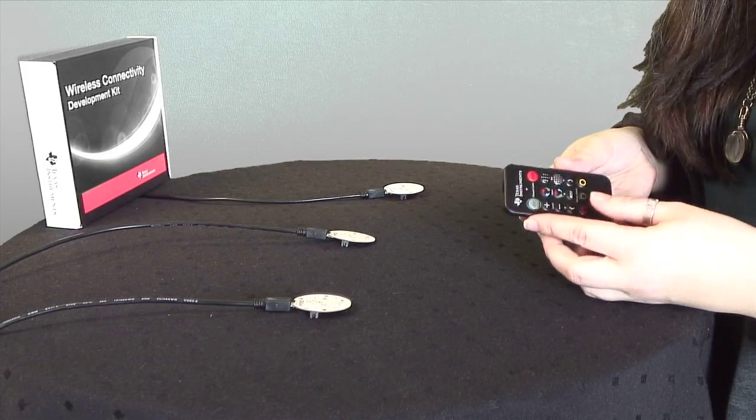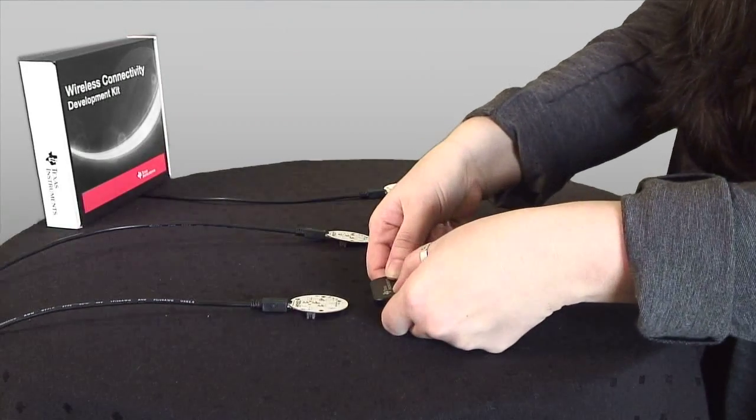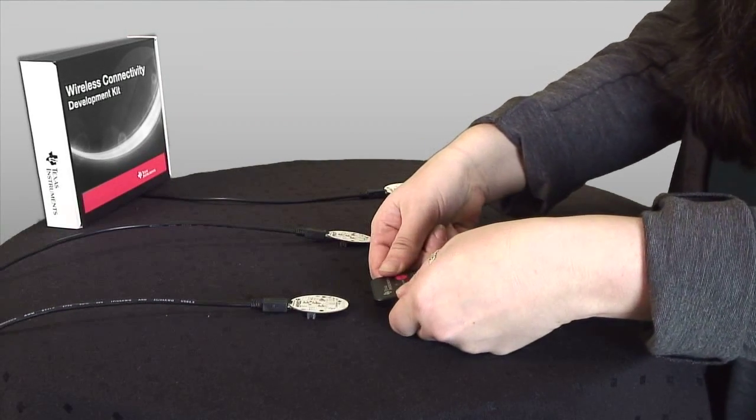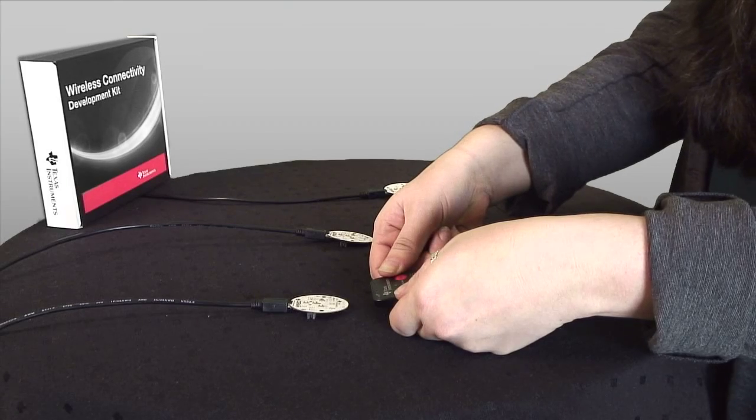The next step to this process is to touch link the remote. To do this you will press the on and off button simultaneously and hold the remote in front of the lamp like this.